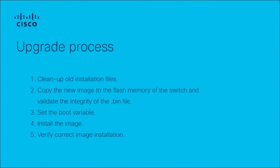The upgrade process consists of five steps. One, clean up all installation files. Two, copy the new image to the flash memory of the switch and validate the integrity of the BIN file. Three, set the boot variable. Four, install the image. And five, verify correct image installation. Let's begin.